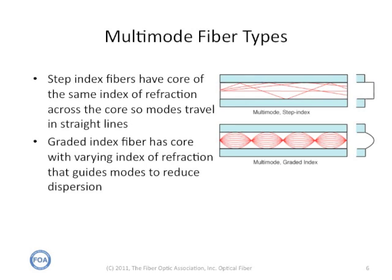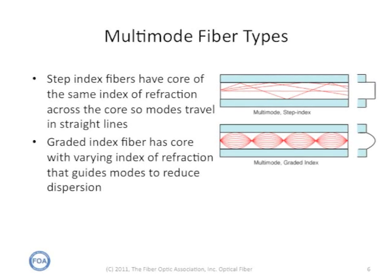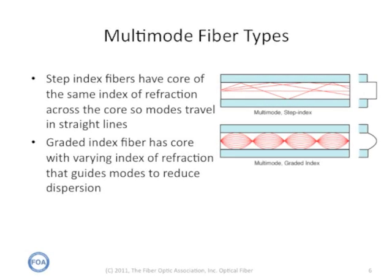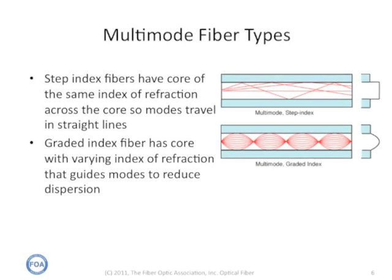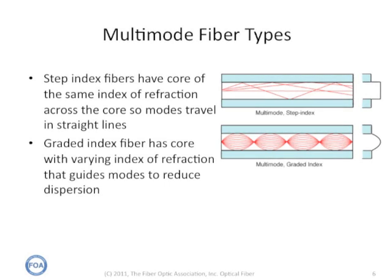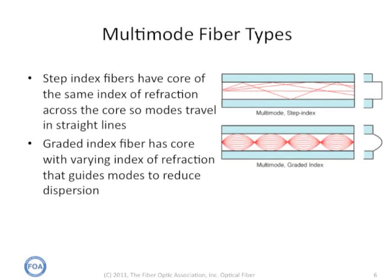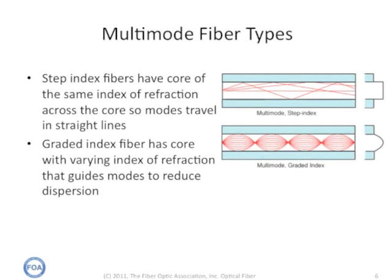Multi-mode fiber comes in two types. Step-index has a core that's all the same material, so the light, or the modes, travel in straight lines, basically bouncing from one side of the core to the other. Graded-index fiber has a core with varying index of refraction that guides the modes. The light traveling in the outside of the core is in a lower index of refraction material and actually travels faster, so it tries to keep all the modes in synchronization throughout the entire fiber.